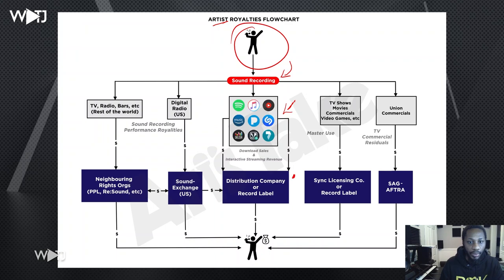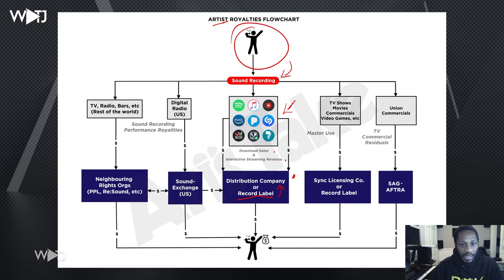Sometimes you have a distribution company or a record label help you get that out. You're going to get download sales and interactive streaming revenue from companies like Spotify, Apple Music, YouTube Music, Amazon, Pandora, Shazam, and so forth. That's one way that you'll get paid. Your distribution company or record label — if you're independent, the distribution company will do that for you, or if you're on a record label, they will have a distribution company or direct partnerships with these streaming services.